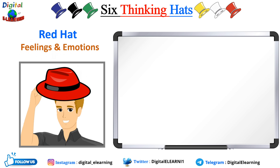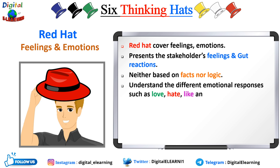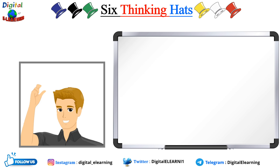The next hat is the red hat, which covers feelings and emotions. This hat focuses on intuition, feelings, and emotions — what people feel about the issue under discussion. Importantly, there is no need to rationalize or explain. The red hat presents the stakeholders' gut feelings about the problem, which are usually left out of discussions since they are neither based on facts nor logic. The red hat helps us understand different emotional responses such as love, hate, like, and dislike, and asks: what is your gut feeling about the suggestions?